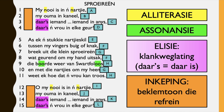Spruidian. My nooi is in 'n narkie, my ouma in kaneel. Dos iemand, iemand in 'n anys, dos 'n vrou in elke geur. As ek 'n stikkie narkieskil tis my fingers buig of knak, breek uit die klein spruidien, wat gerend om my hand uitsak. Die boorde weer van die Swart Verloos, en met die narkies om my sny, weet ek hoe dat die vrou kan troos. Oe my nooi is in 'n narkie, my ouma in kaneel. Dos iemand, iemand in 'n anys, dos 'n vrou in elke geur.